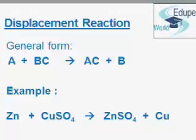Let us discuss displacement reaction with the help of an example. Zinc reacts with an aqueous solution of copper sulphate to form zinc sulphate and copper. So we can see in this chemical reaction that zinc is reacting with copper sulphate and it is producing zinc sulphate and copper.